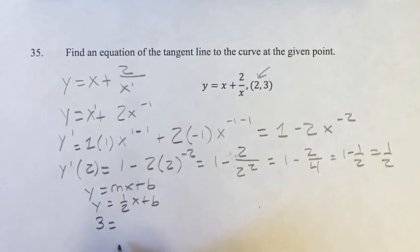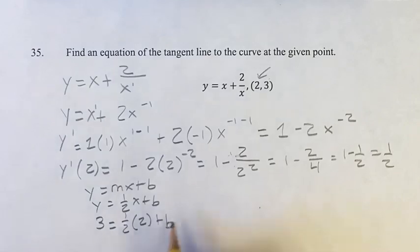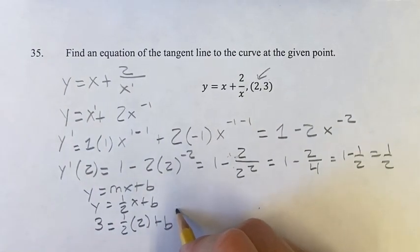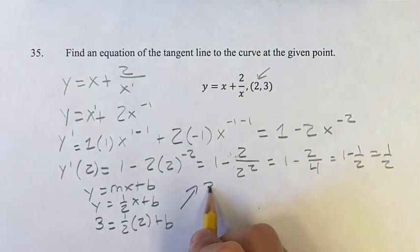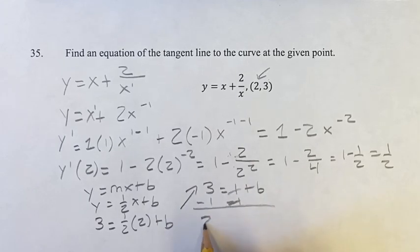Which is going to give us 3 for y is equal to 1 half, x is 2, plus b. Bring that up here, we have 3 is equal to 1 half times 2, is 2 divided by 2 is 1, plus b. Subtract 1 from both sides to get 2 is equal to b.